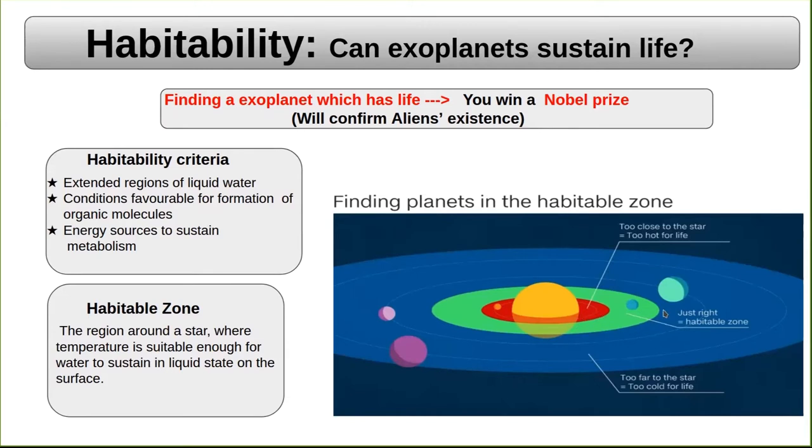Now consider the region which is shown here in blue color. The temperature here is too less for the water to exist in liquid phase. There is a region which is shown here in green color. Here the temperature is suitable enough for water to exist in liquid phase.